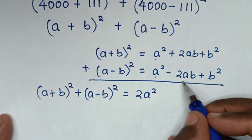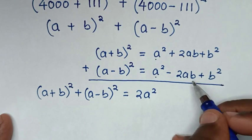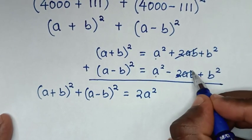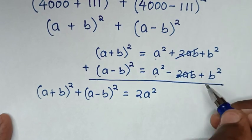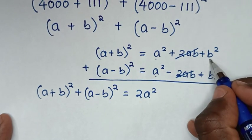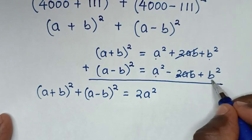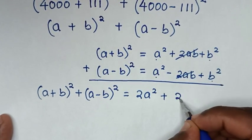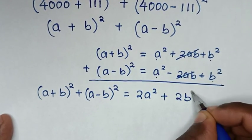The 2ab and −2ab cancel out to zero, and b² + b² gives 2b². So the combined result is 2a² + 2b², which we can factor as 2(a² + b²).